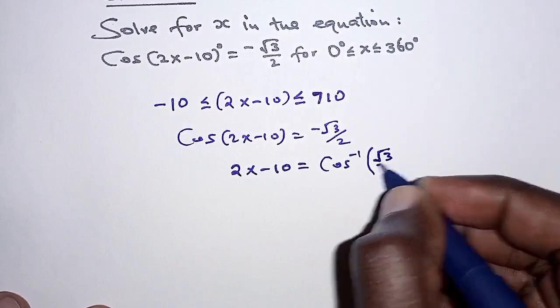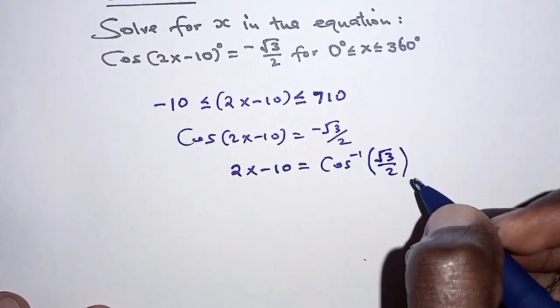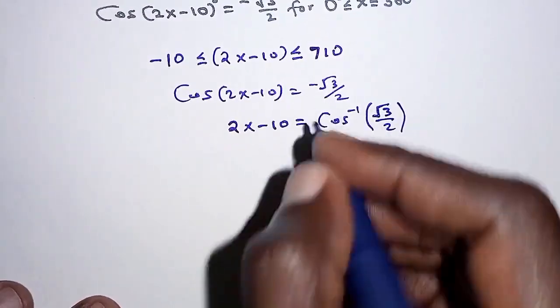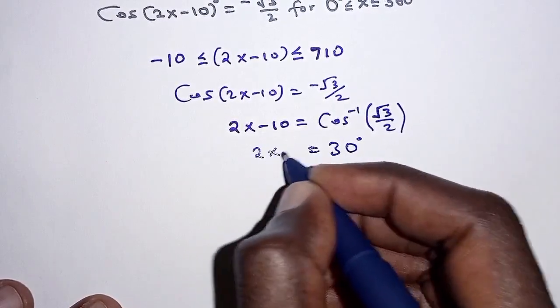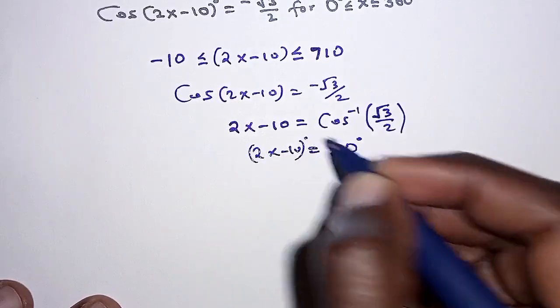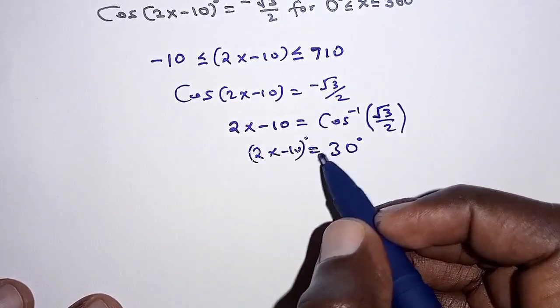cosine inverse of root 3 over 2. So we have 2x minus 10 is equal to 30 degrees. Now this is not yet the solution.